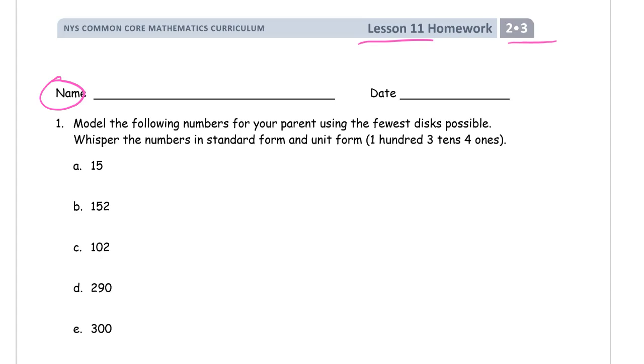Here's an example of unit form, where we say 1 hundred, 3 tens, 4 ones. When you say a word in standard form, it sounds exactly the same as when you say it in word form. It's just how you write it differently.